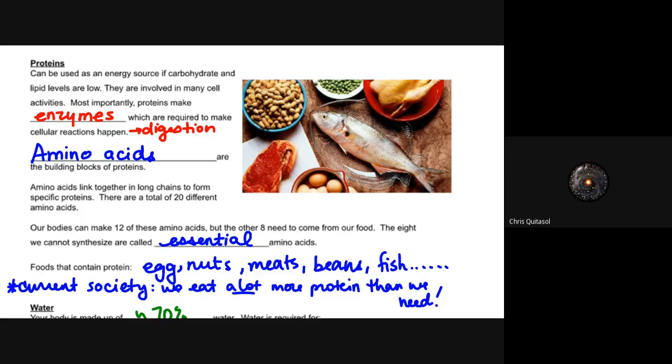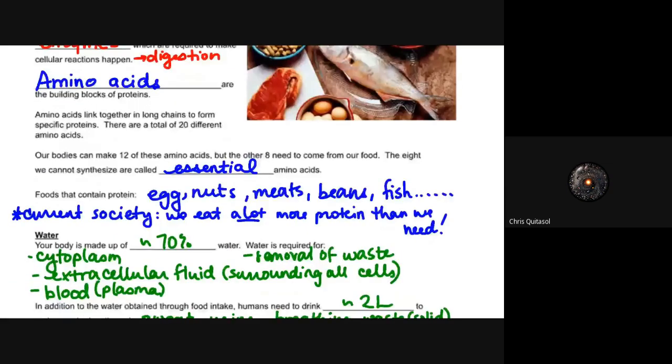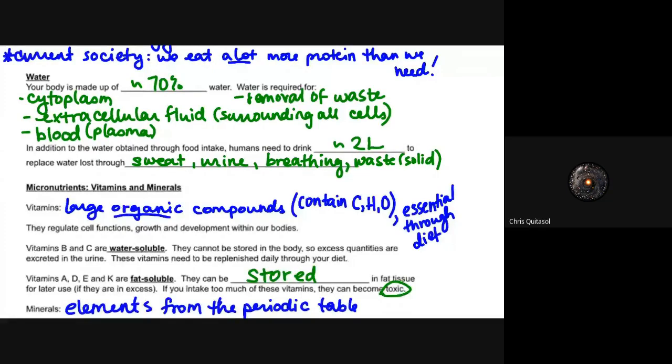And then lastly, in terms of the macronutrients that we can get from non-production of animal or plants, it's water. We're made up of 70% of it, and it's needed for all sorts of different things. But I would say it's probably the most important in terms of removal of waste as well as blood. But the cytoplasm, extracellular fluid, all of that stuff is quite important. So when we do obtain quite a bit of our water through food intake, but approximately two liters needs to be taken from liquid water as a result of sweat, urine, breathing, waste, whatever you want to call it. We lose that amount of water any given day, so it's important that you stay hydrated and drink lots of water.